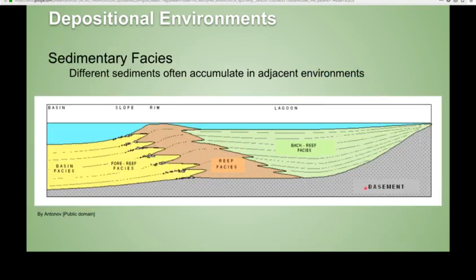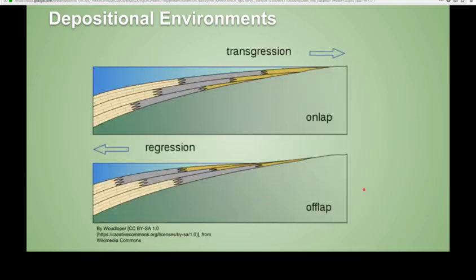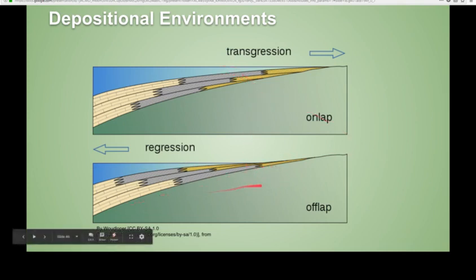You can get these sedimentary facies where you kind of know what typifies these different environments and how they're related to each other. These can represent changes in sea level, where the sea level can be rising and lapping onto a shore, or lowering and lapping off of a shore, leaving behind these patterns — these facies of change in those depositional environments.